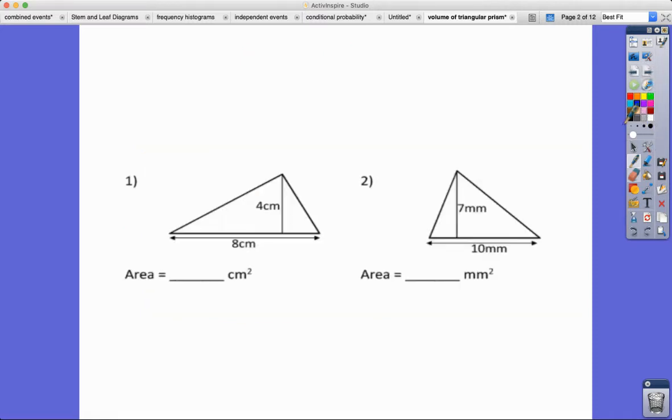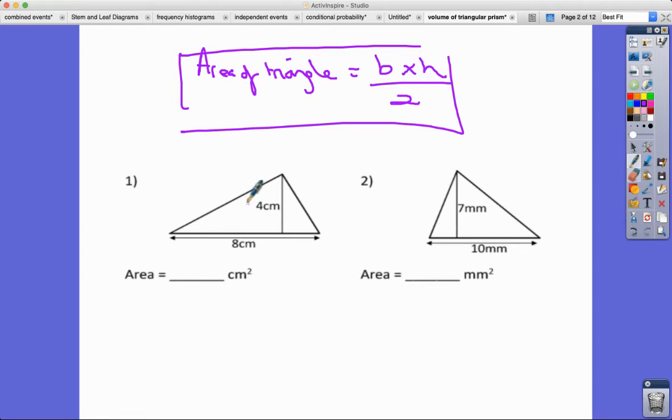Here we are, so we've got some bases and heights. Let's write out the formula again: the area of a triangle is base times height divided by two. In this case, the area is going to be 8 times 4 divided by 2, which is 32 divided by 2, which is 16 centimeters squared.